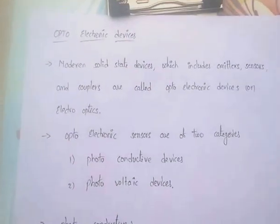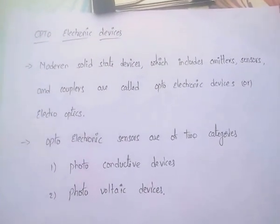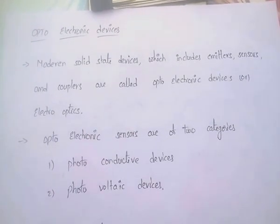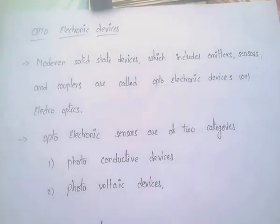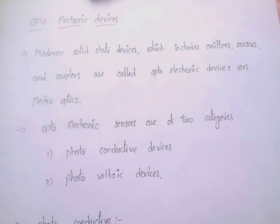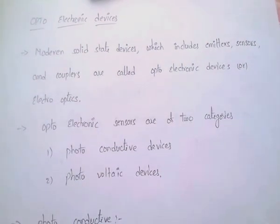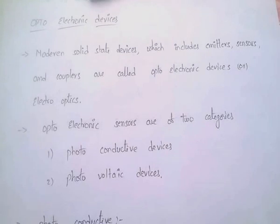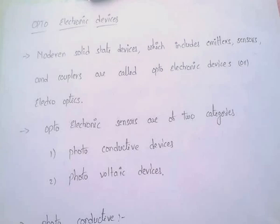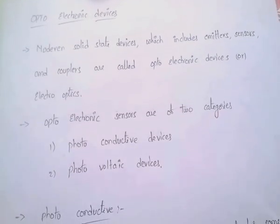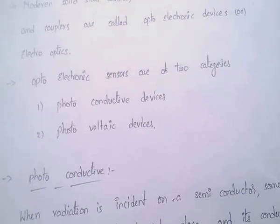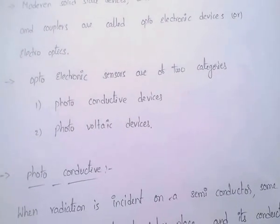Next, optoelectronic devices. Optoelectronic devices are electro-optics. In case of modern solid state devices, which includes emitters, sensors, and couplers, these are called optoelectronic devices. These optoelectronic sensors are of two categories.